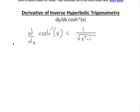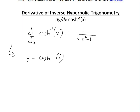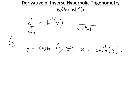The first thing we do is write: let y equal the inverse hyperbolic cosine of x. For inverse functions, this is the same as switching x and y, so x equals hyperbolic cosine of y, where y is the input to x. This is just what the inverse function means.